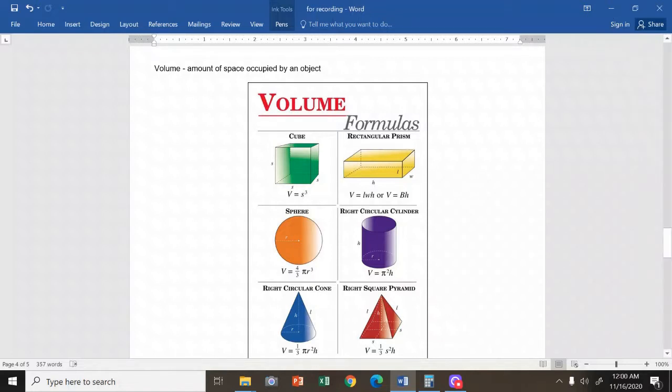We define volume as the amount of space occupied by an object. You can imagine, for example, if you have a box, and then, let's say, you place objects inside. The number of objects it can contain refers to the volume.